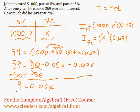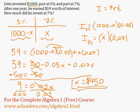And now I can divide both sides by 0.02. These guys cancel out. And what is X equal? X is equal to $450. So he invested $450 at 7%.